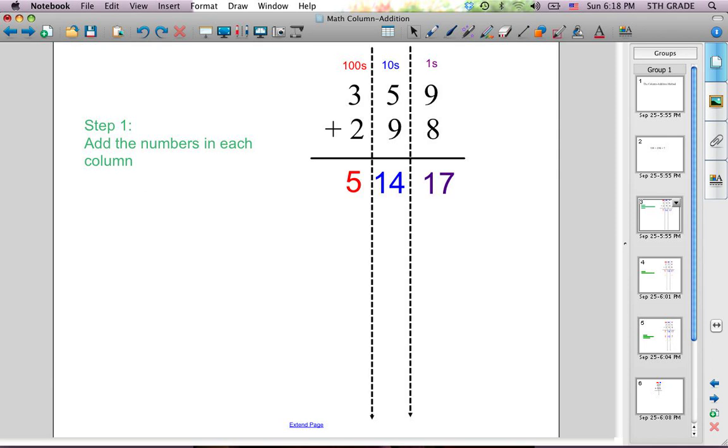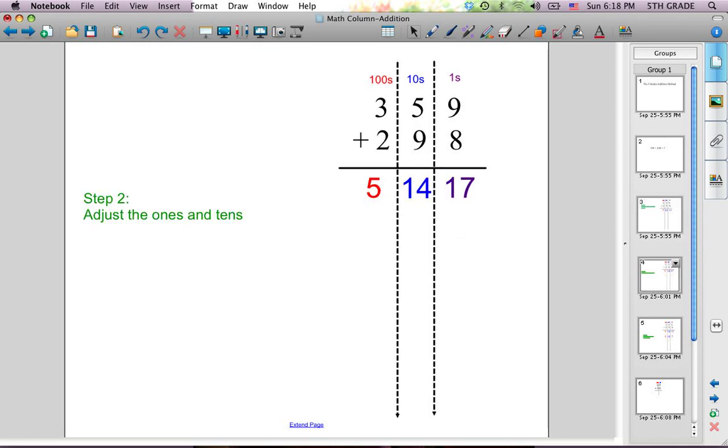Now, if you notice, we can't have more than one digit in each column, so we need to move on to step number 2, which is to adjust the ones and the tens.